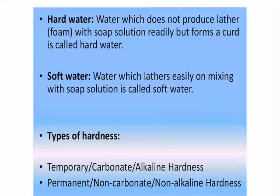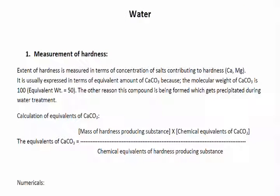We learned that hardness is of two types — temporary and permanent — and you also know which methods one can choose to remove such hardness. Now in this lecture I am going to explain how to calculate hardness of water when the concentration of different salts present in water is known.